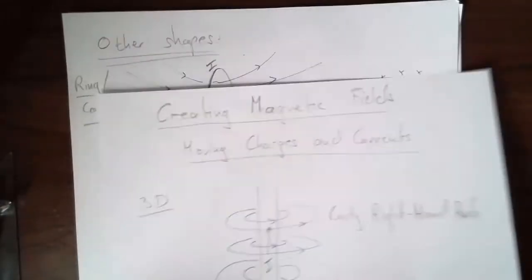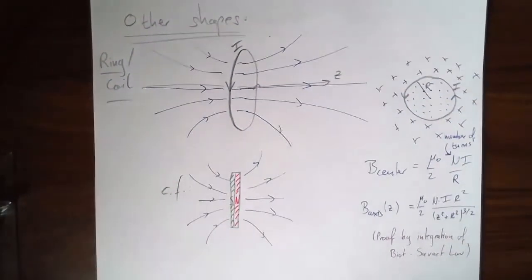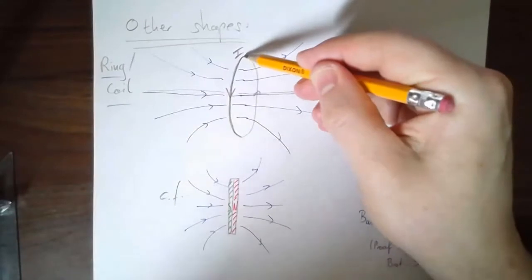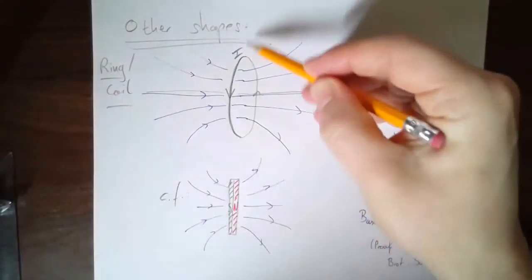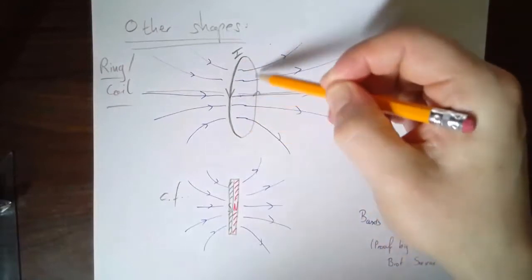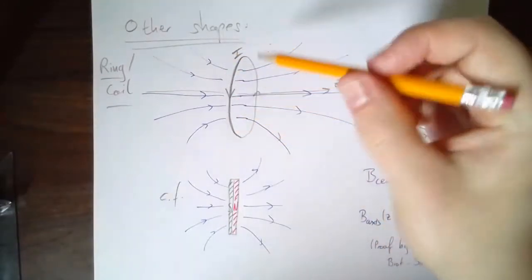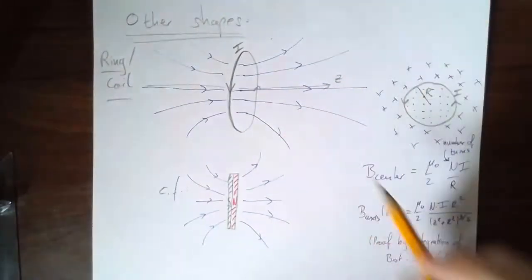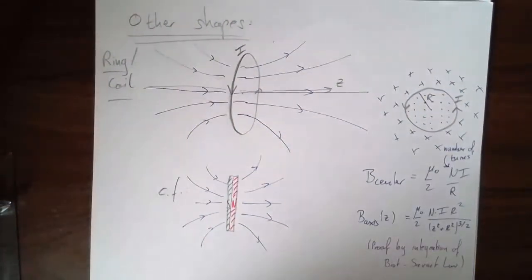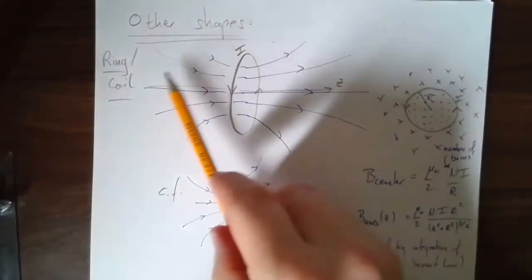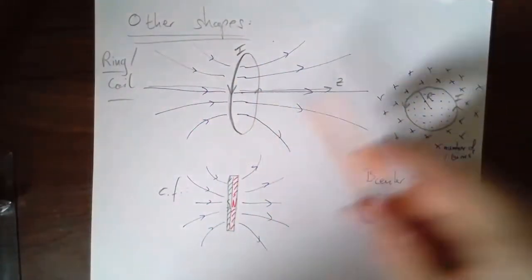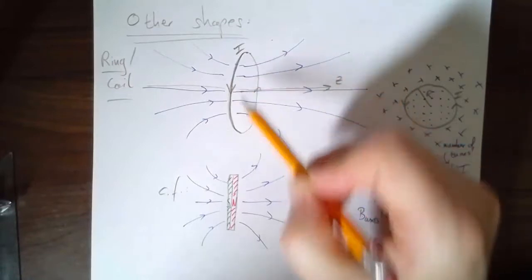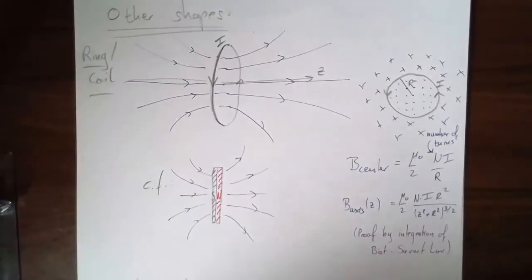It might be that you have a different shape of wire. One simple example is a loop. To have a current in a loop you probably want a little battery somewhere, but whatever drives it, there's a current in this loop. I tried to draw it in 3D — it's really hard. If you do that, you get a magnetic field that looks something like this. You could prove this by imagining what each tiny bit of wire contributes and adding them all up, which mathematically we do by integration.